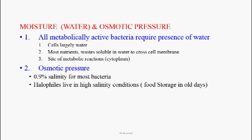Water and osmotic pressure are also required. All metabolically active bacteria require water, as the cytoplasm consists largely of water in which nutrients and waste products are dissolved, allowing them to cross the cytoplasmic membrane. The optimal osmotic pressure for most bacteria corresponds to 0.9% salinity. Some bacteria, called halophilic organisms, can live in high salinity conditions — the major example being the Vibrio group of organisms.